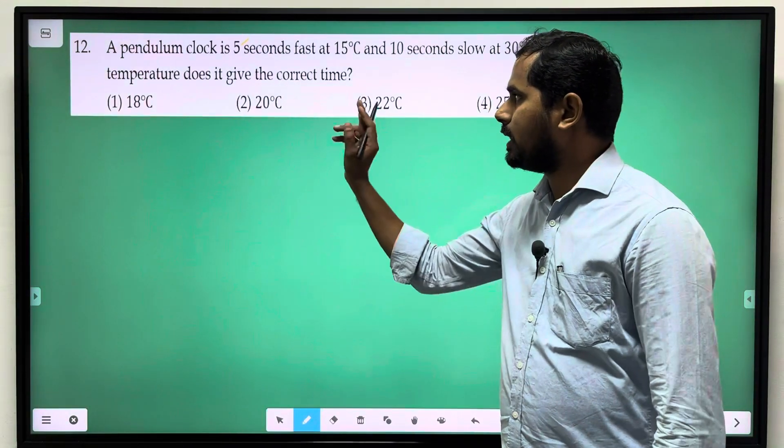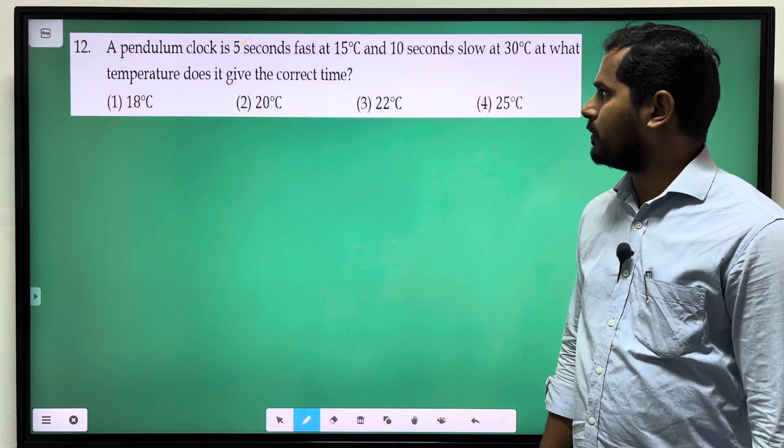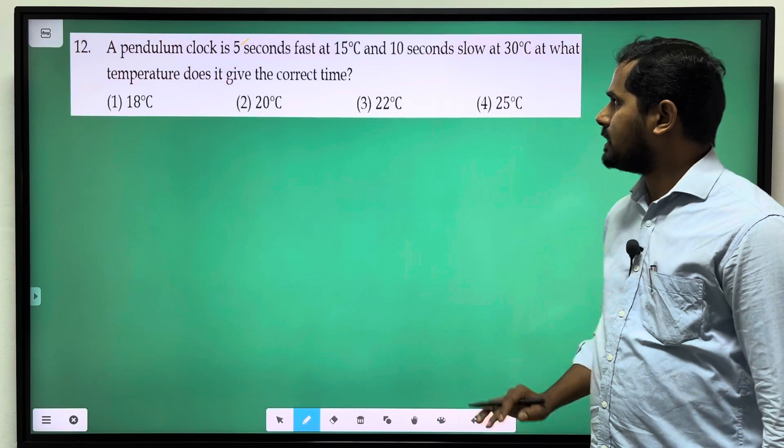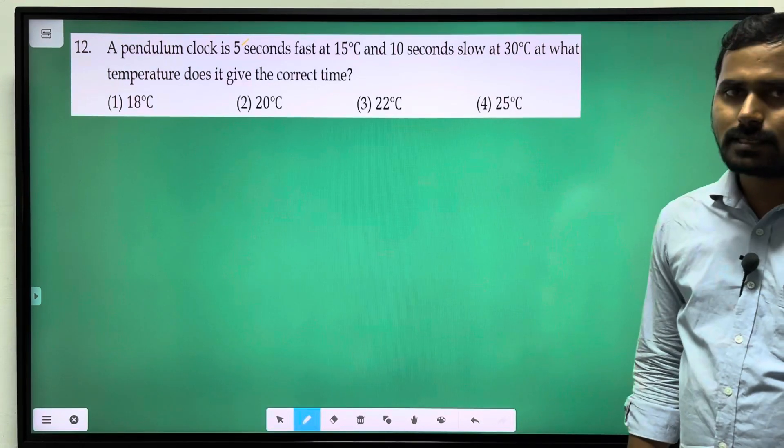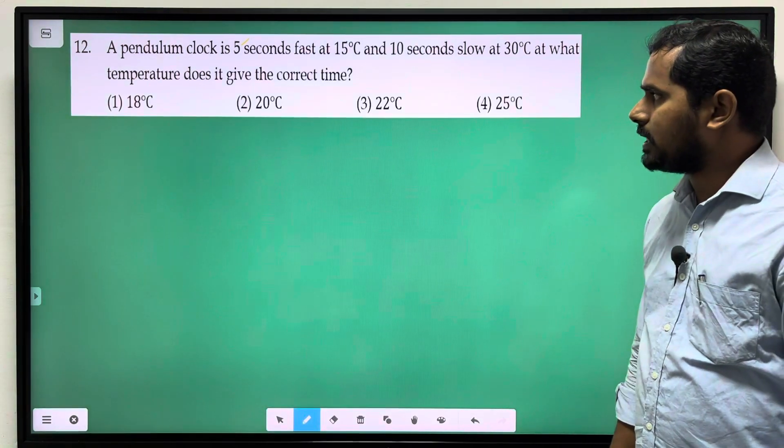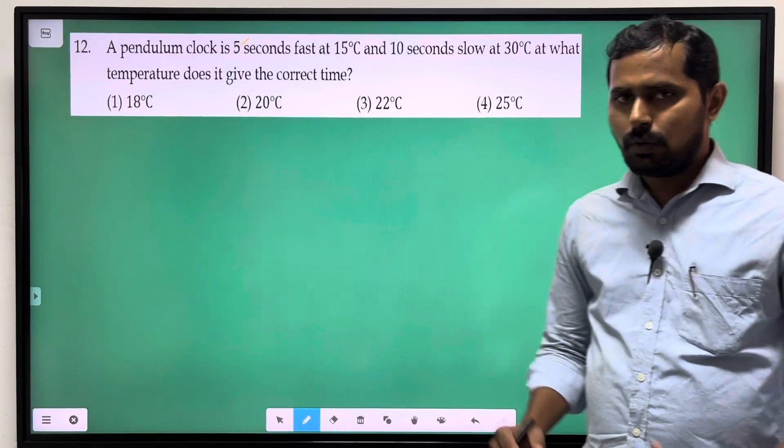A pendulum clock is 5 seconds fast at 15°C and 10 seconds slow at 30°C. At what temperature does it give the correct time?